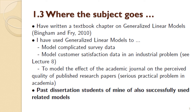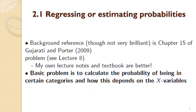The subject can go somewhere interesting even if you don't necessarily enjoy quantitative research methods. The basic problem here is regressing or estimating probabilities — these are technically called qualitative response regression models, but a better name is probability regression models. The background reference is chapter 15 of Gujarati and Porter, though it's not really very good. Better resources include my own lecture notes and textbook, these lecture recordings, the PDF lecture slides, and the PDF study book.